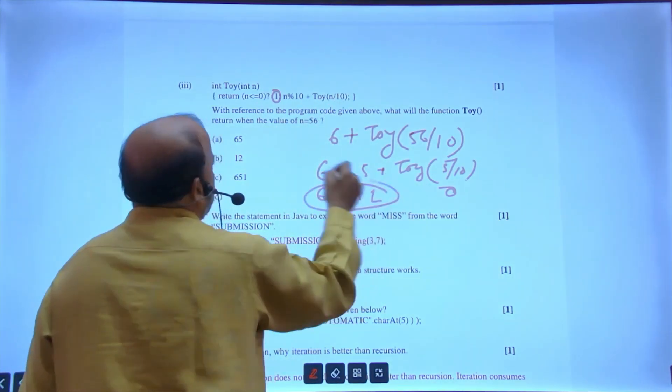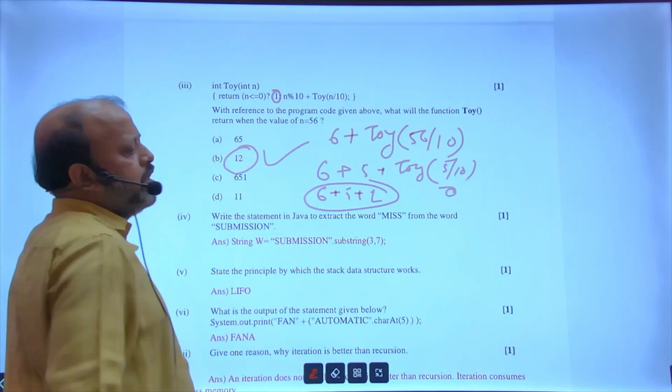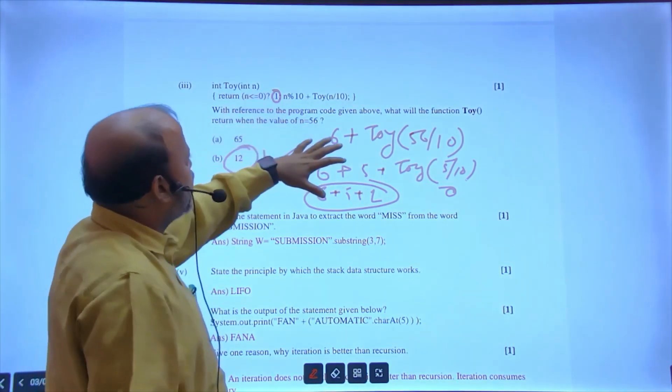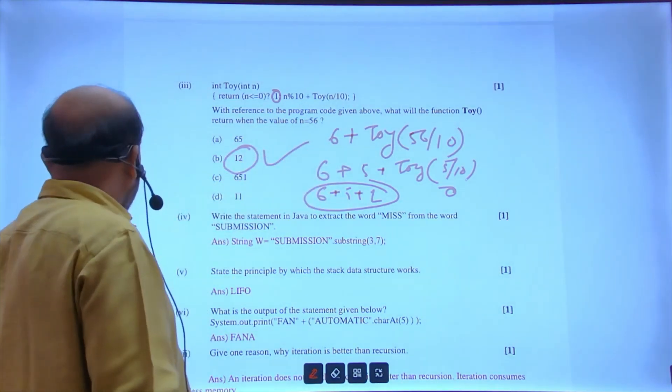So when you're getting 0, you're getting this 1. So you're getting 6 plus 5 plus 1, you're getting 12. Your answer is 12. This type of question will be there, you have to use your understanding.